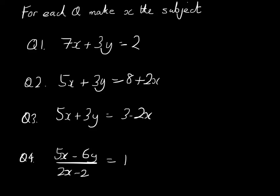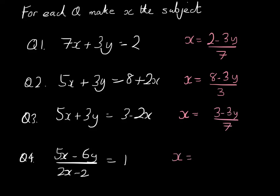And here are your answers. The answer for the first one is that x is going to be equal to 2 subtract 3y all over 7. The answer for the second one is that x is going to be 8 subtract 3y all divided by 3. The answer for the third one is going to be that 3 subtract 3y all divided by 7. And the answer for the fourth one, when you make x the subject, you get yourself 6y subtract 2 all divided by 3. And x is equal to that. And there we are. This is changing the subject.